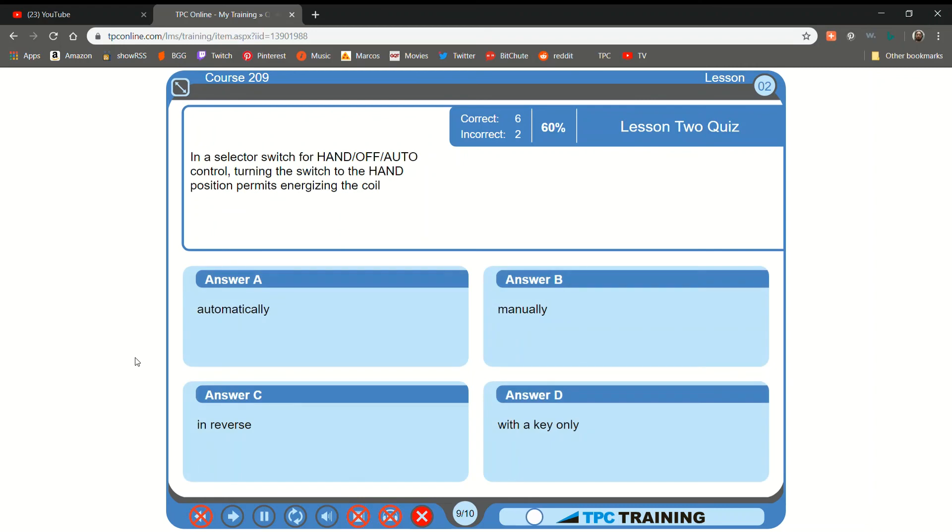In a selector switch for hand-off auto control, turning the switch to the hand position permits energizing the coil, A, automatically, B. That is not correct.